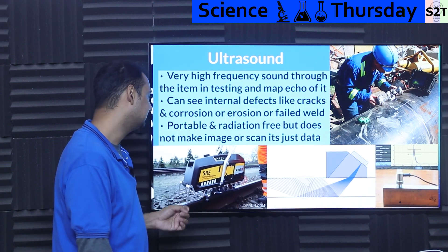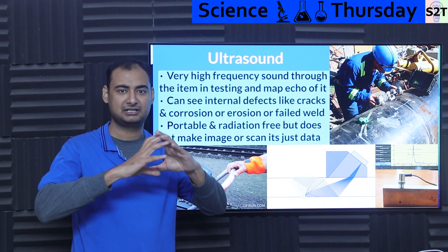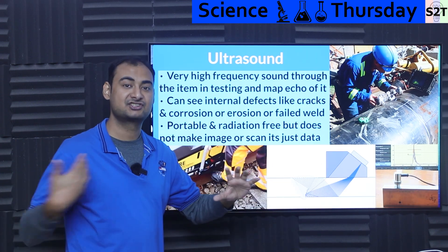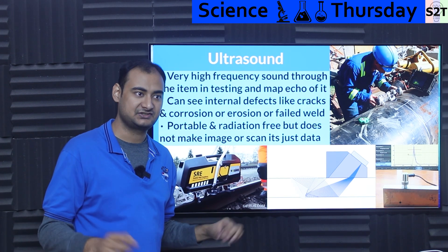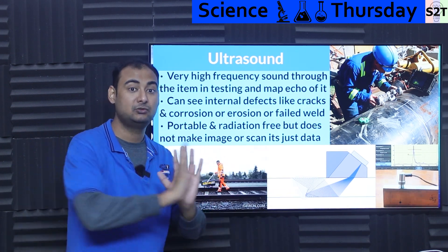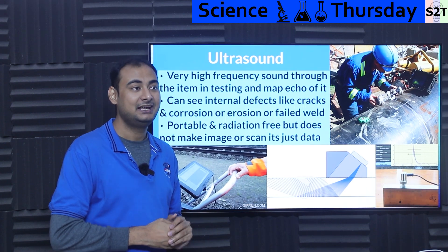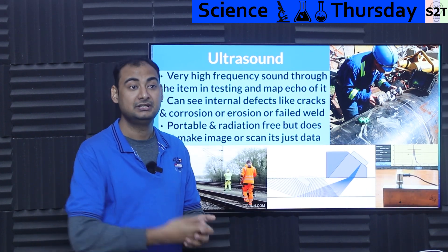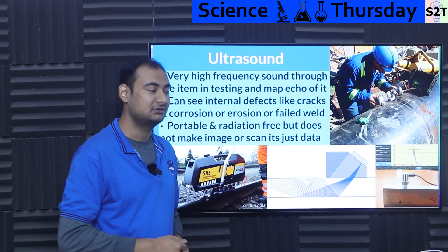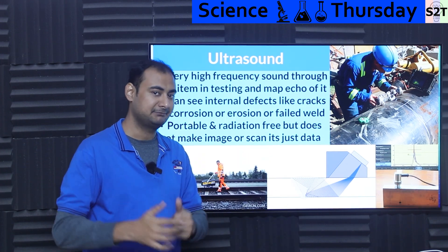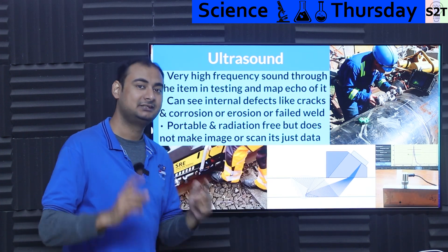It allows you to see internal defects, corrosion, and erosion. For example, if you have a pipe carrying crude oil with particulates, it's eroding. Day one, nothing happens; day 500, something happens. If it's eroding too much, you need to know without stopping or cutting open the pipeline. Ultrasound can handle that — and sometimes it can be done while the pipeline is running.